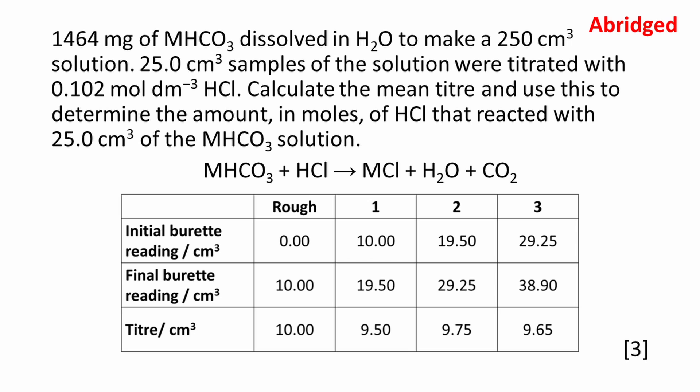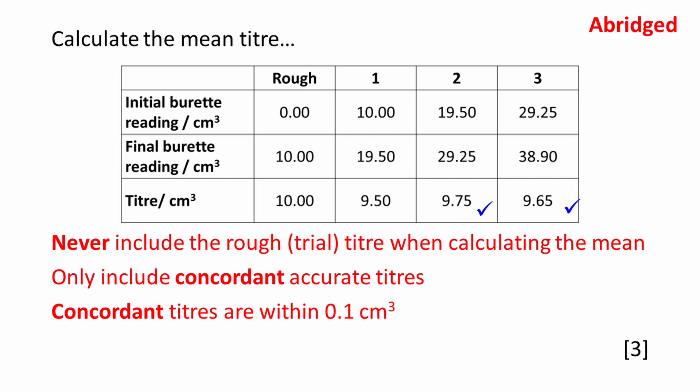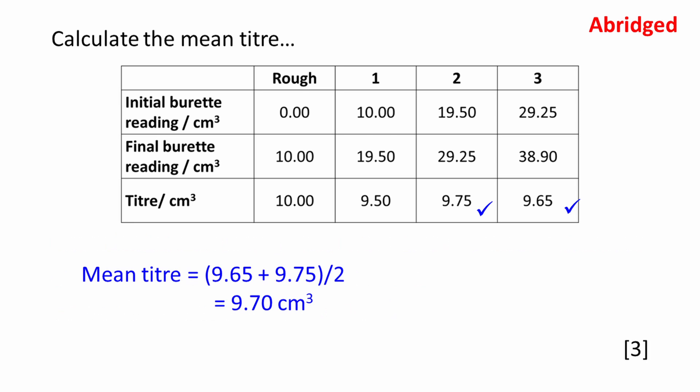For the first part of the question we have to calculate the mean titer and use this to determine the amount in moles of HCl that reacted with 25 cm³ of the MHCO3 solution. When calculating the mean titer you never include the rough titer, sometimes called a trial. We only include concordant accurate titers. Concordant titers are within 0.1 cm³. It is good practice to put a tick next to the concordant titers that you will use to calculate the average. The average, or mean titer, works out to be 9.70 cm³.